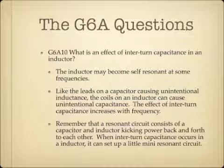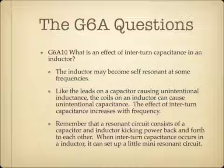What is an effect of inter-turn capacitance in an inductor? The inductor may become self-resonant at some frequencies. This is similar to the leads on a capacitor causing unintentional inductance — the coils on an inductor can cause unintentional capacitance. The effect of inter-turn capacitance increases with frequency. A resonant circuit essentially consists of a capacitor and an inductor kicking energy back and forth, so when inter-turn capacitance occurs in an inductor, it can set up a little mini resonant circuit. That's one of the effects of inter-turn capacitance in an inductor.